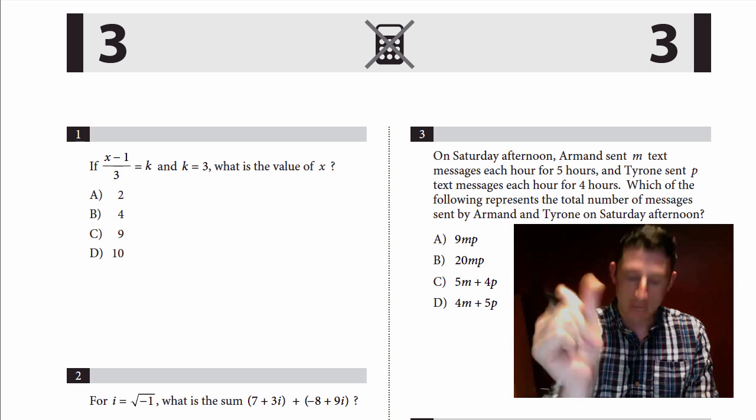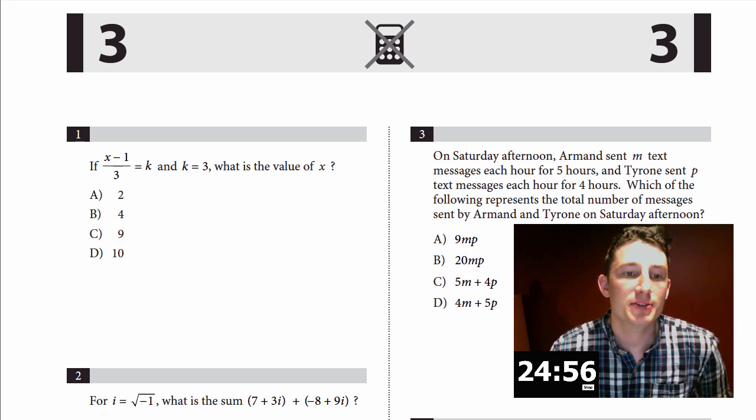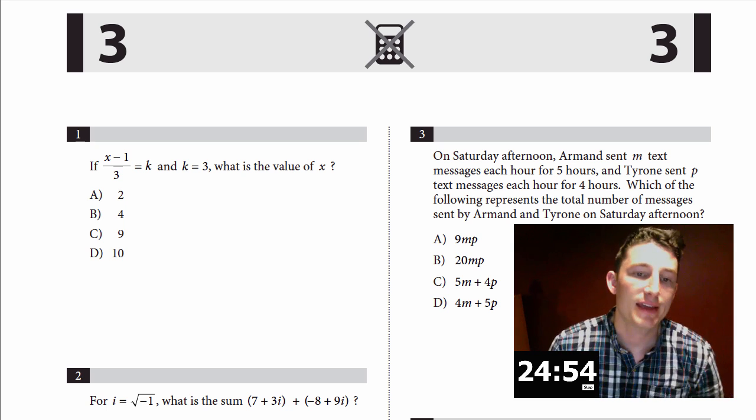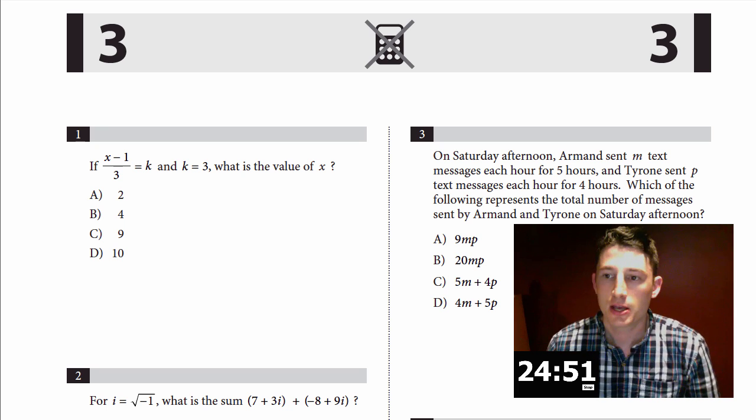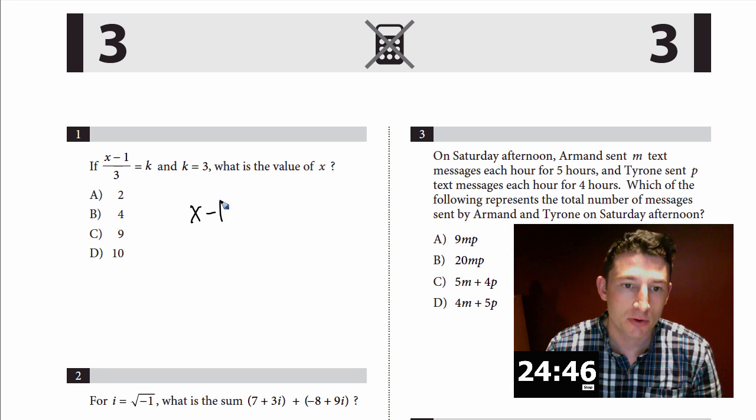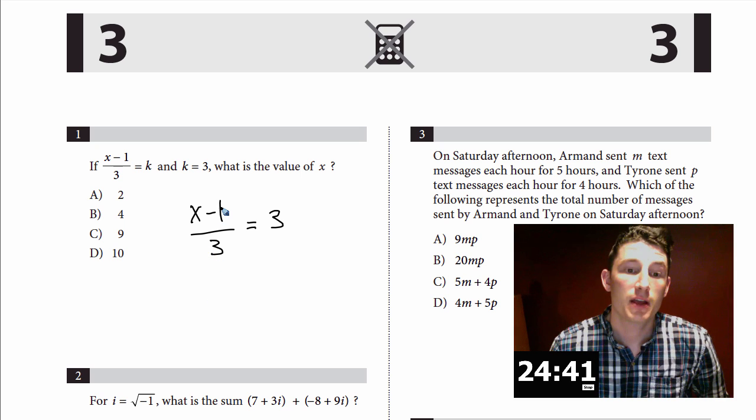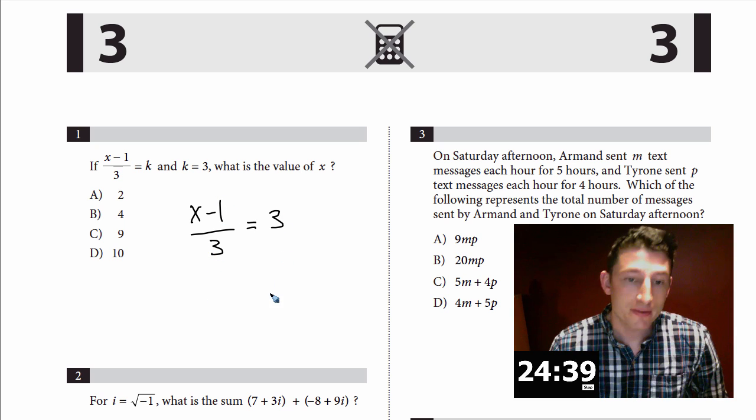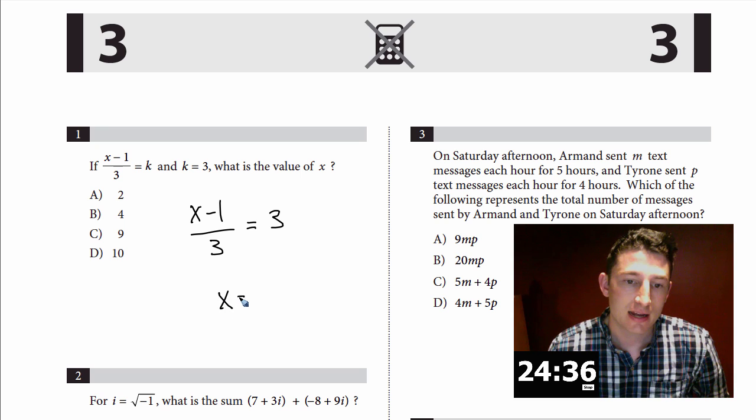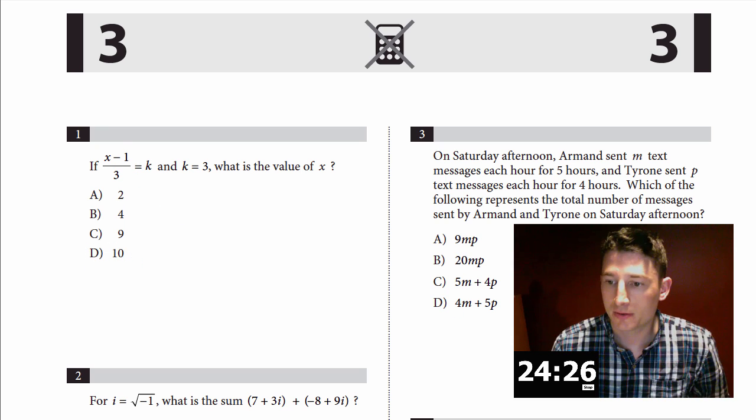Question number one: if (X - 1)/3 = K and K = 3, what is the value of X? You can do this two ways. Some people might just set it up and cross multiply. Another way: set this whole thing equal to 3. Think to yourself, well what divided by 3 gives you 3? That means the top part has got to be 9, right? So how do I get 9 in the top here? Well that just means X has to equal 10. 10 minus 1 is 9.